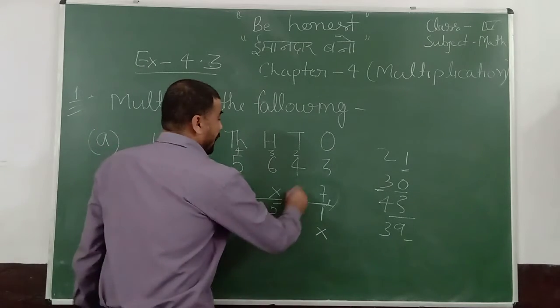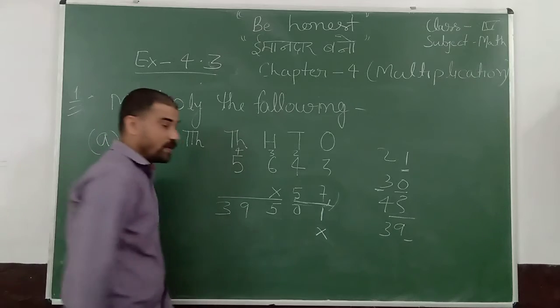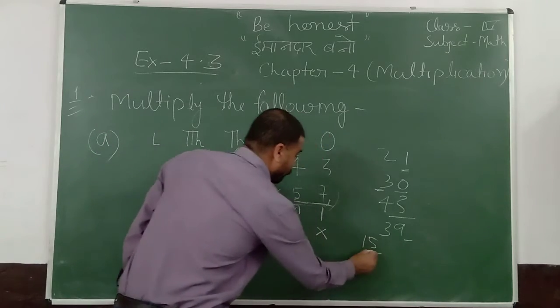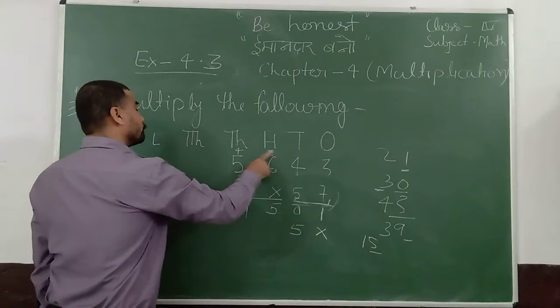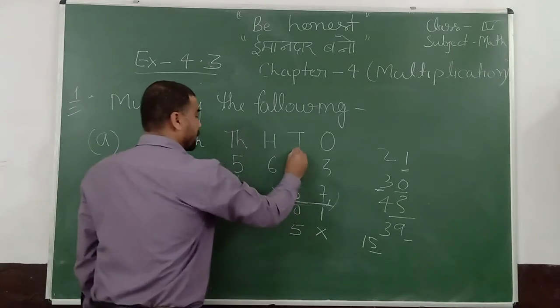So 5 into 3 is 15. Put 5 here. 1 is carry.